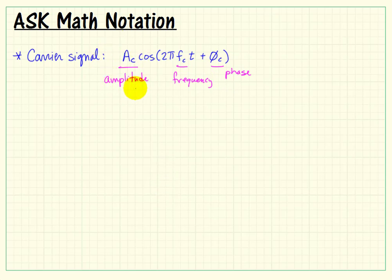Now, if we vary the amplitude according to a binary signal, we call that amplitude shift keying. If we vary the frequency between two different frequencies, that's FSK, frequency shift keying. And if we vary the phase between two different values, we have PSK, phase shift keying.